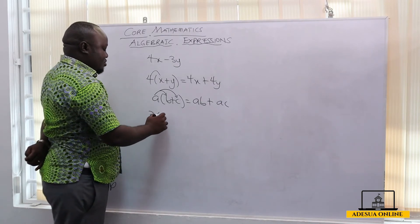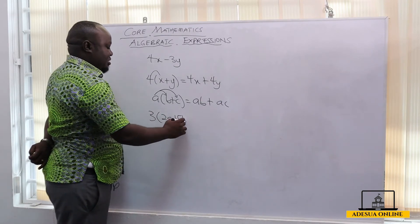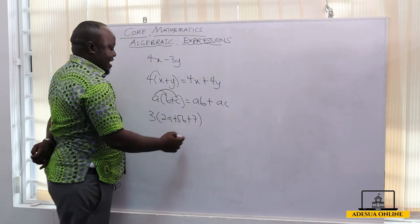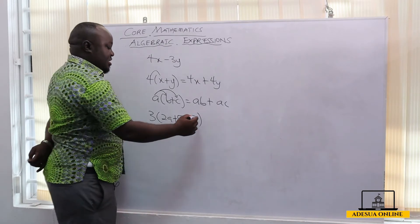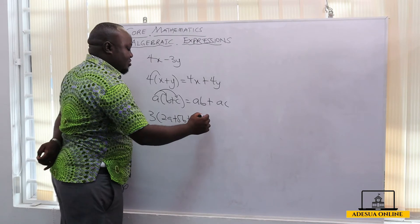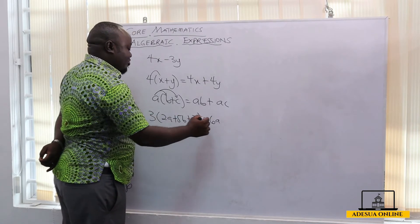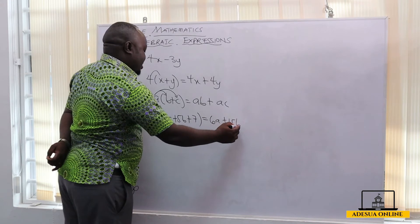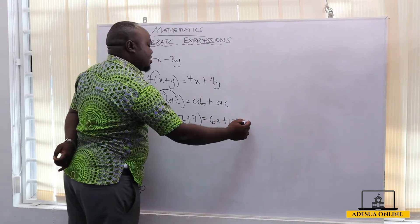The same way, if I have 3 into 2a plus 5b plus 7 and I want to expand this, it becomes 3 times 2a which is 6a, 3 times 5b which is 15b, and then 3 times 7 which is 21. So this becomes our answer.